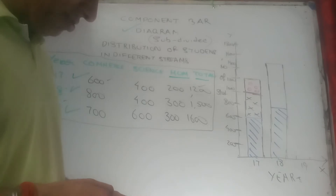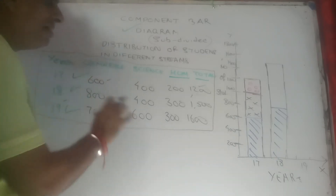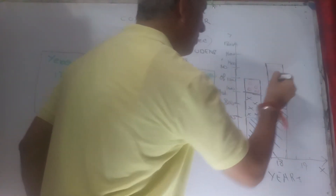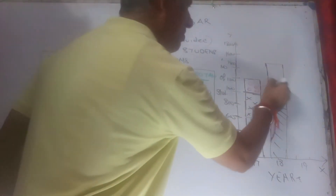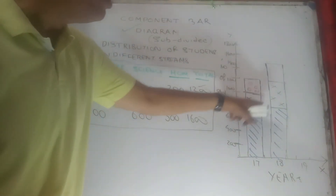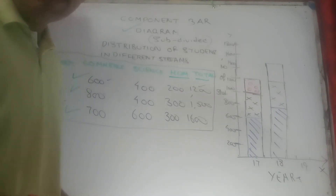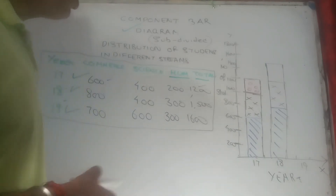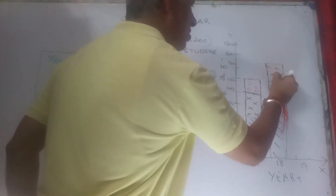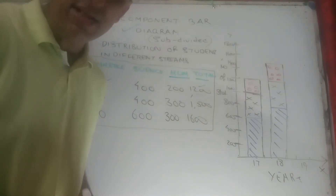Moving to the next one: the science students. They are 400, so 800 plus 400 makes it 1200. The size of the rectangle tells me that both are identical — no change in the strength of the science students. And represented on the upper half are humanities students, with the total being 1500.